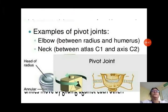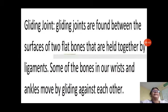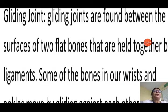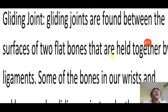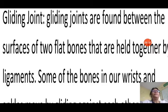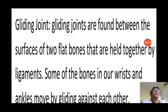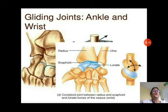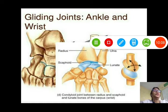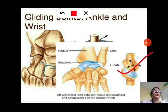Fourth: gliding joint — gliding joints are found between the surfaces of two flat bones held together by ligaments. Some of the bones in our wrists and ankles move by gliding joints, sliding past each other. You can see in the picture how they glide against each other.